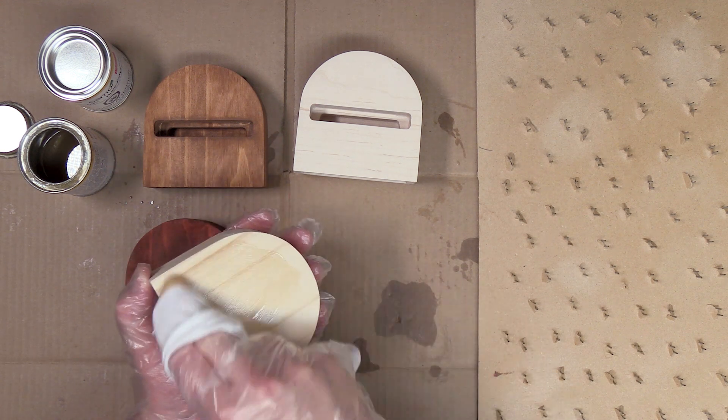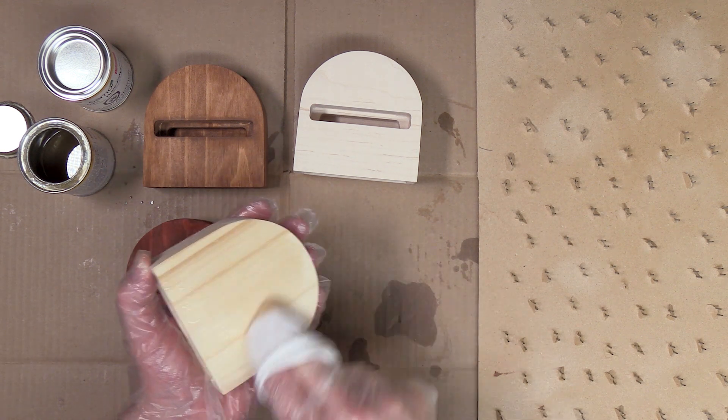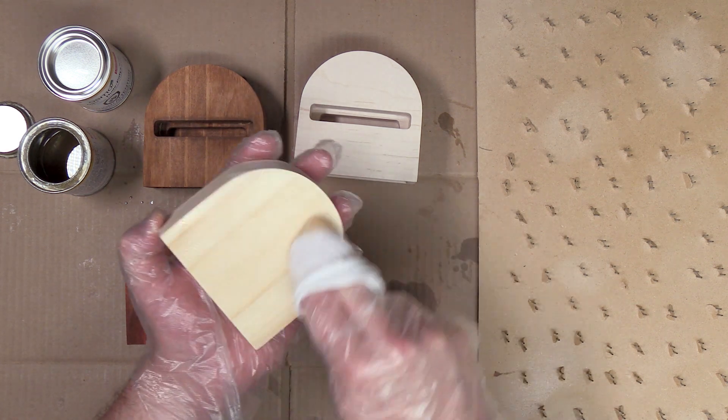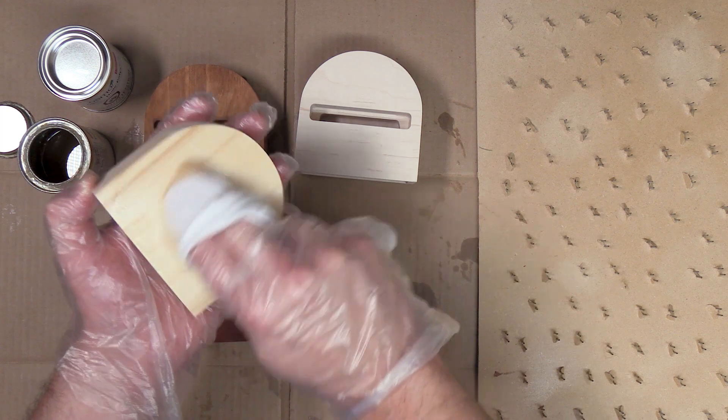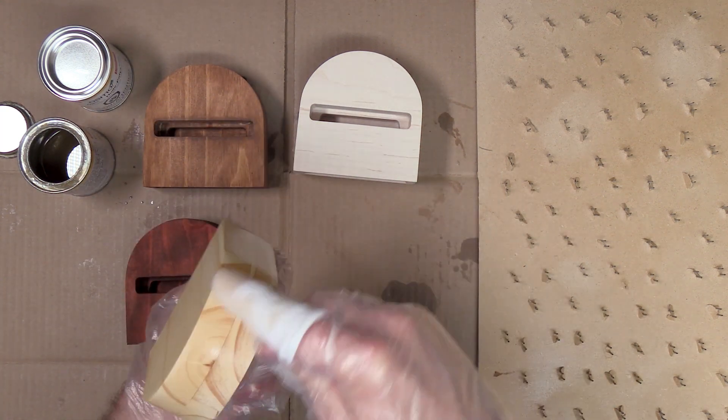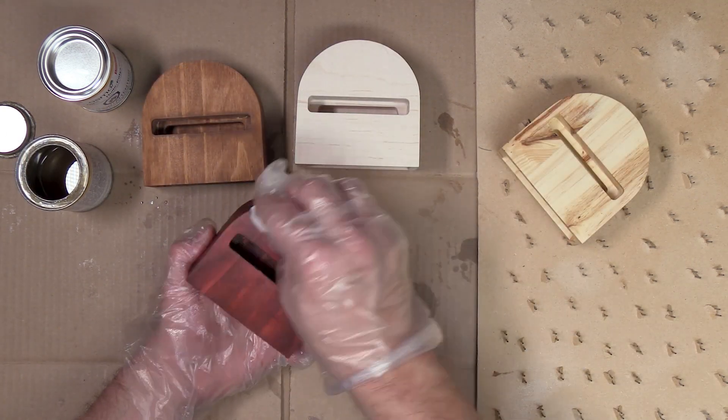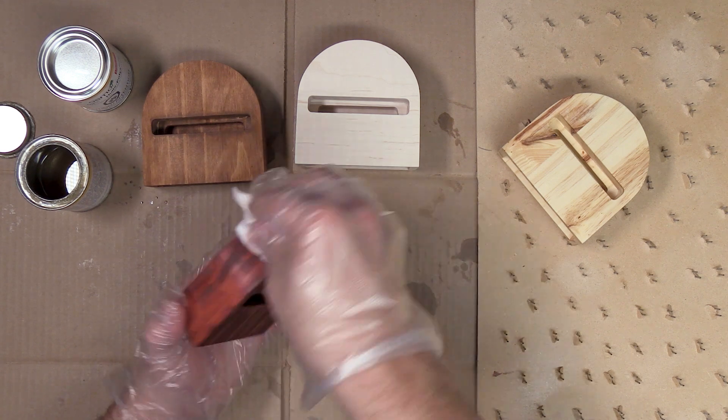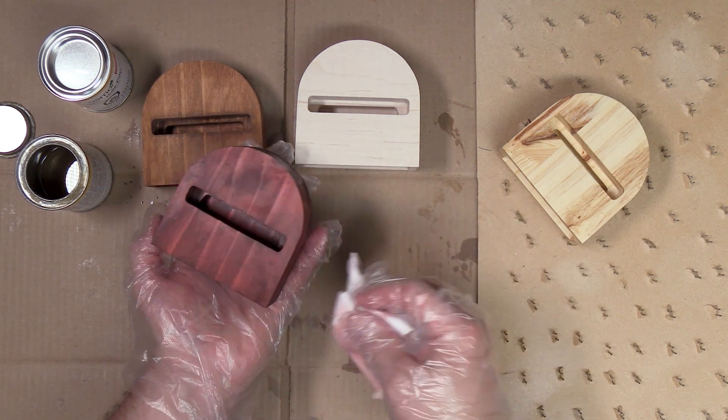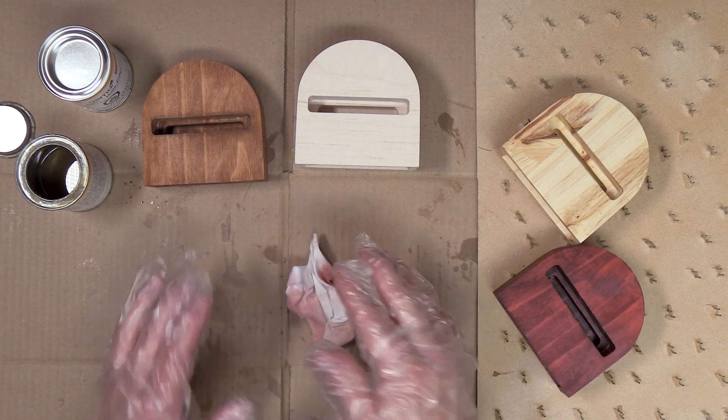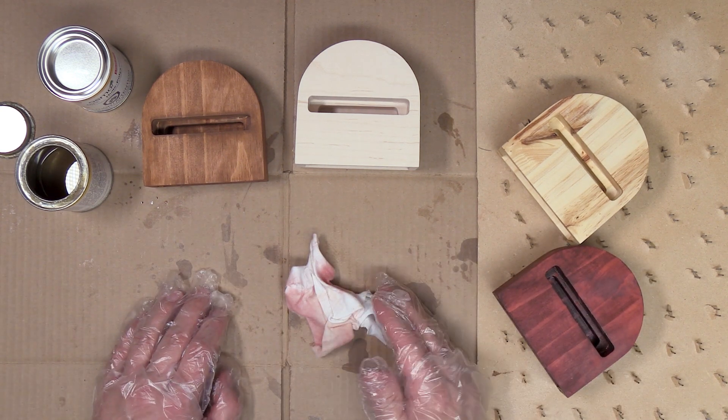It's a simple wipe on wipe off application for the oil and I'll be using a rag for that. I'll also be giving all my projects two coats. So once I'm done applying this Osmo oil to the projects I'm going to let them dry overnight. In the morning I'm going to apply one more coat and when that's dry I'll be back to show you the finished product.